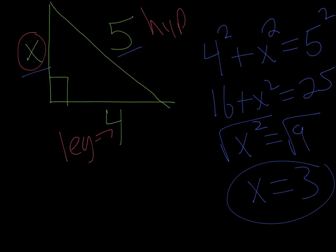So X is 3. That's one example of how I can use the Pythagorean theorem to solve for one of the sides. As long as I have two sides, I can solve for the third.